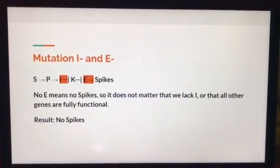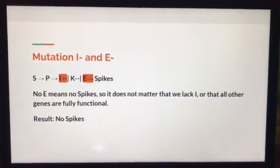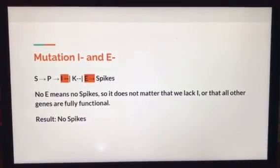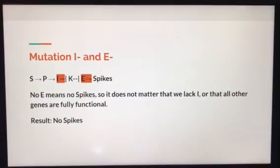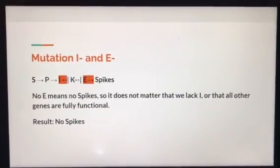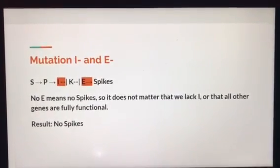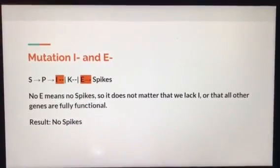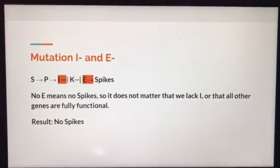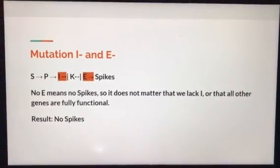A mutation in I and E does the same thing, but since there's no E to begin with, it does not matter that the other genes are not coded for, because E is not functioning to produce spikes, even if it could.